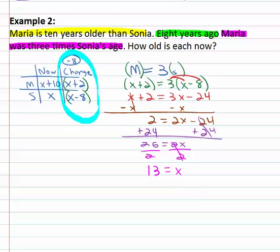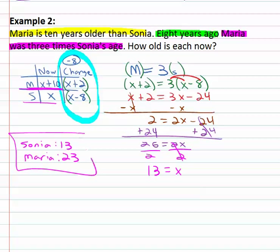But who is that? Sonia is x. Sonia is thirteen. Maria is x plus ten. Thirteen plus ten is twenty-three. We now have the age of Sonia and Maria.